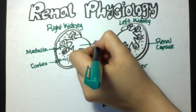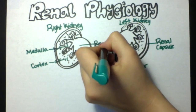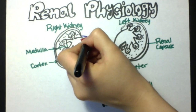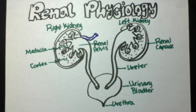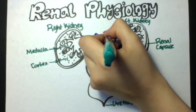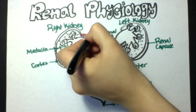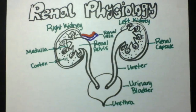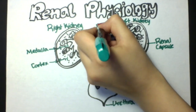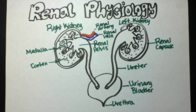The kidneys have an outer layer called the renal capsule and it is divided into two sections, the cortex and the inner medulla. The kidneys are highly vascularized. Blood runs through the renal artery and exits through the renal vein.